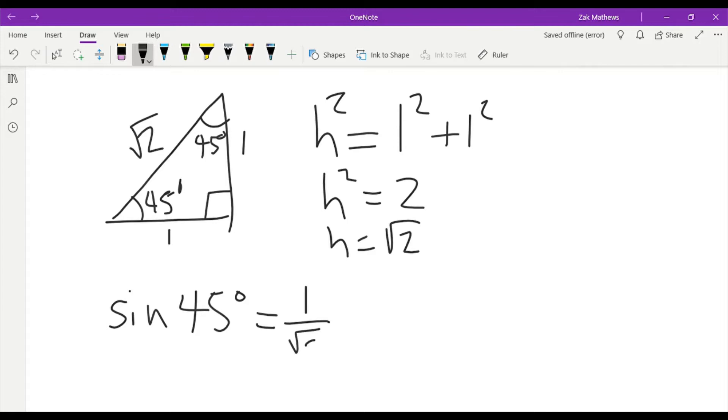I do need to rationalize that. I do want to rationalize all my unit circle values or the special triangle values. So I'm going to multiply by root two over root two. When I do that I get root two over two. And those of you that have already seen the unit circle that may look familiar, we'll see those again.